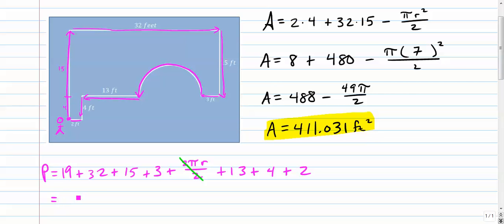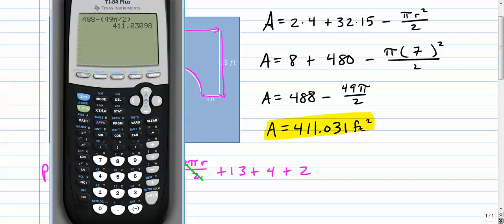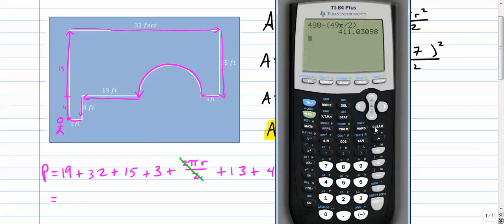So now it's just an exercise in addition here. So we go back to our calculator. Let's clear that out. And we're going to go 19 plus 32. That's 51 plus 15 plus three. Plus pi times r. We already said r was seven. So seven pi. Plus 13. Plus 4. Plus 2. So it's 109.991.